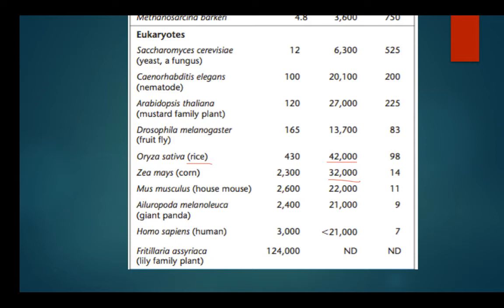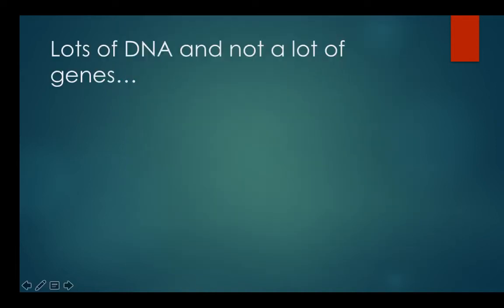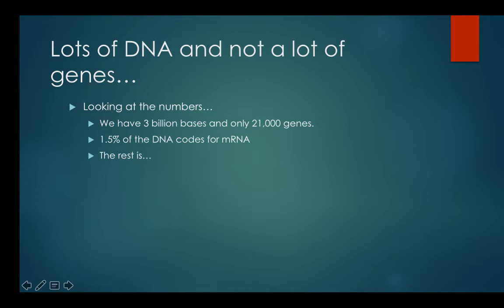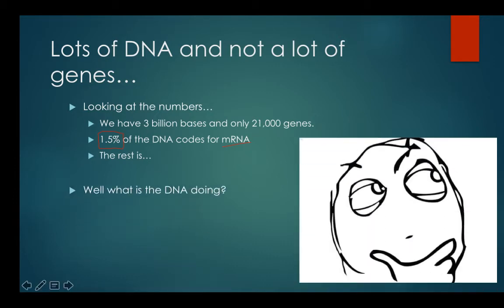When we do the math, we find out that only 1.5% of our DNA actually turns into mRNA. That shows us that we have the entire code for our DNA, but only 1.5% of that actually does something we understand in terms of making protein. What the heck is the rest of it doing? That's what I want to talk about now — what is the rest of the DNA doing? We don't really understand it, and it does give us some questions.